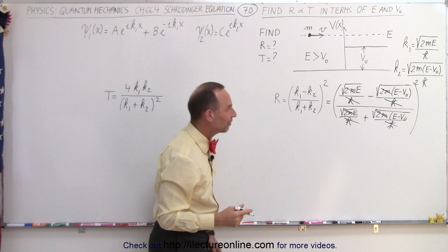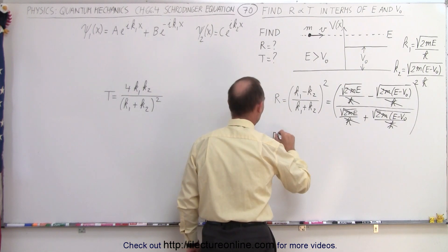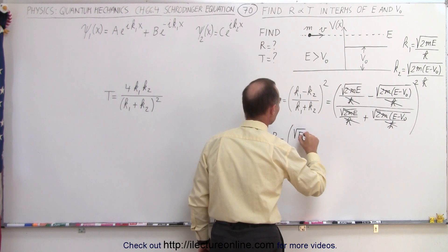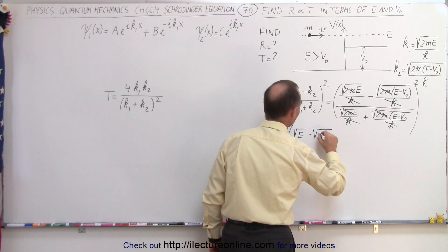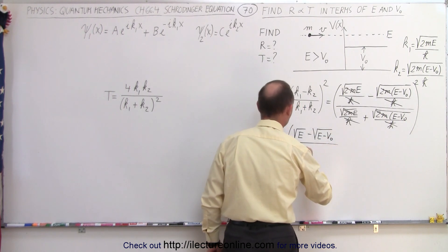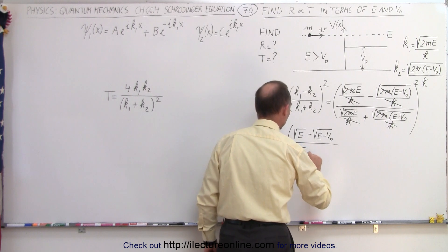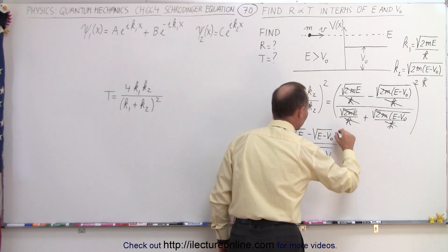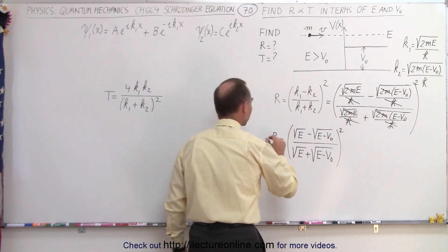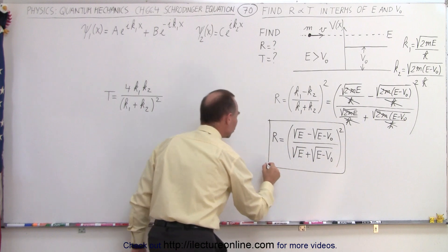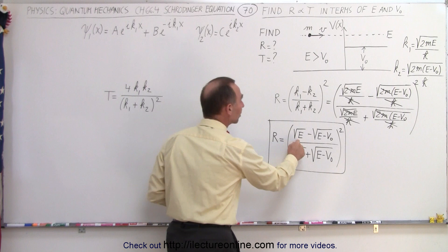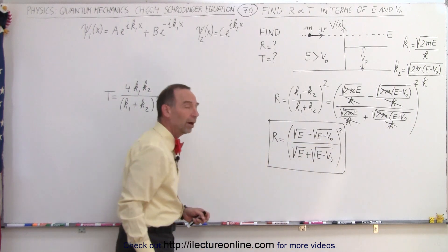In simplified form, the reflection coefficient is equal to the square root of E minus the square root of (E − V₀), divided by the square root of E plus the square root of (E − V₀), with the whole quantity squared. This is a nice equation to use to find the reflection coefficient when we're given the energy of the particle and the potential of the step.